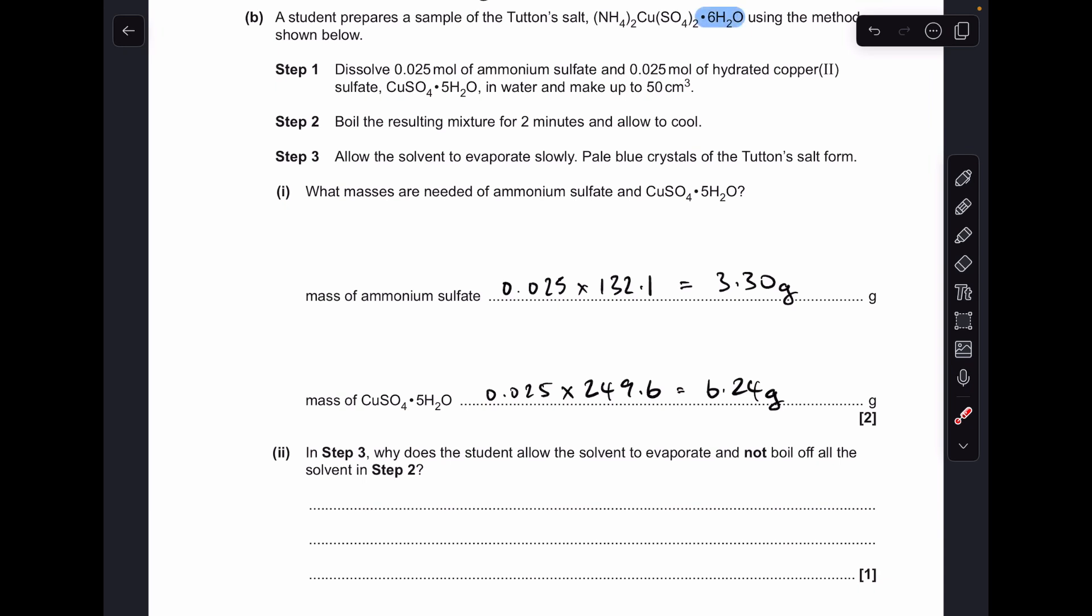And for the last part of B, we've got to explain why in step three, the student allows the solvent to evaporate and not boil it off. We've got to be careful we don't drive off the water of crystallisation because the tutton salt has to have this part in its formula. So if you heat it too strongly, the water of crystallisation will disappear. I'm just saying if heated too strongly, the water of crystallisation would be driven off.